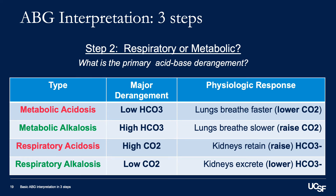Once we've determined whether the blood is acidemic or alkalemic, we'll look at the bicarbonate and carbon dioxide levels to determine whether the primary issue was respiratory or metabolic. For example, if the blood is alkalemic, a metabolic alkalosis would show a high carbon dioxide and a high bicarbonate. If it were a respiratory alkalosis, you'd expect a low carbon dioxide and a low bicarbonate, and the same would go for our acidemias.